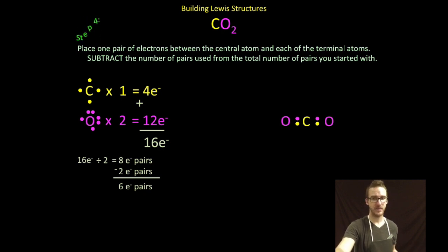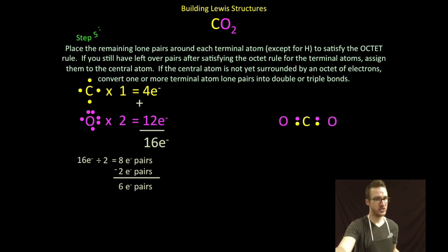Just keep in mind if you've got pairs left over, the first place you're going to try to assign them are those terminal atoms. In this case they will accept additional electrons because I'm trying to get them to an octet. I'm going to give each of my terminal atoms three pairs of electrons. Notice that gives each of them an octet or eight electrons total. I've used up six pairs, I have no pairs left.